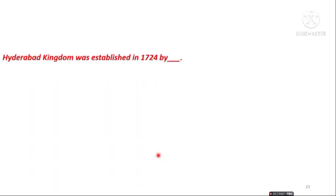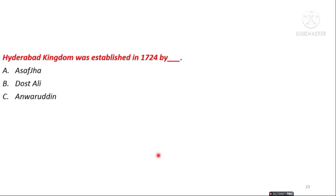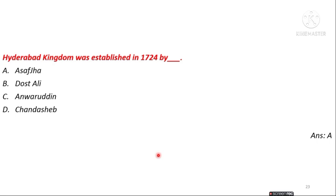The next question is: the Hyderabad Kingdom was established in 1724 by whom — Asaf Jah, Dost Ali, Anwaruddin, or Chanda Sahib? The answer is option A — Asaf Jah established the Hyderabad Kingdom in 1724.